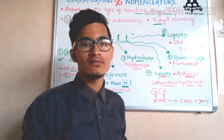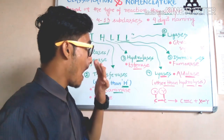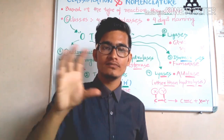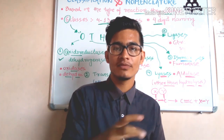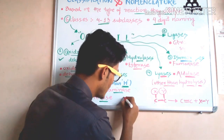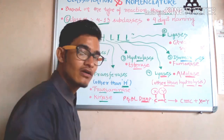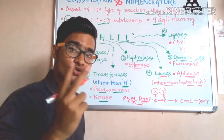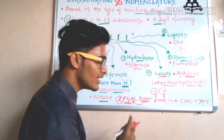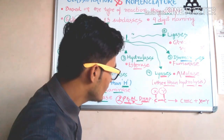Now the fifth category is isomerases. Isomerases catalyze the conversion of optical isomers or geometrical isomers — that interconversion is catalyzed by isomerases. For example, in glycolysis, the next step after forming PGAL and DHAP involves DHAP being isomerized into PGAL, so there would be two PGAL molecules — one directly and one from DHAP conversion. This interconversion is catalyzed by an isomerase.